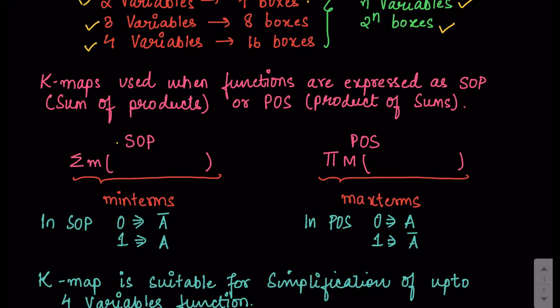In case of SOP we represent it with the sigma function and the numbers written inside the bracket are called min terms. The range of these numbers depends on how many variables the function has. In SOP, 0 is represented as the complement of the variable and 1 is represented as the variable itself. For POS we use pi as the symbol with capital M, and the numbers in the bracket are called max terms. In POS, 0 is represented as the variable itself and 1 is represented as the complement.